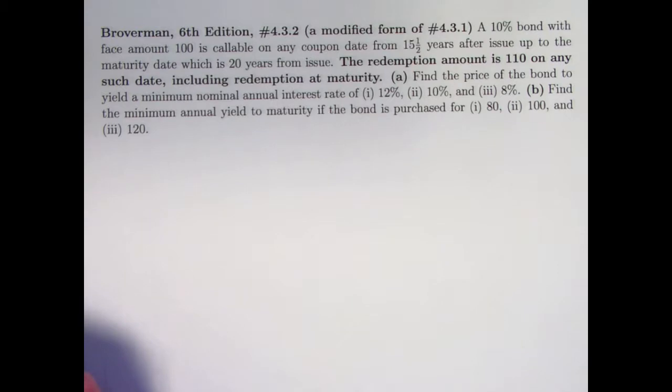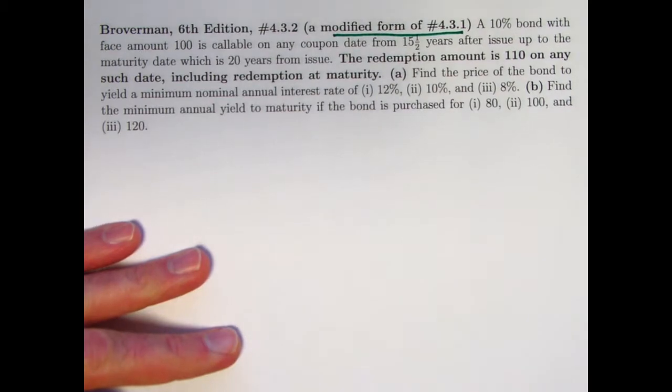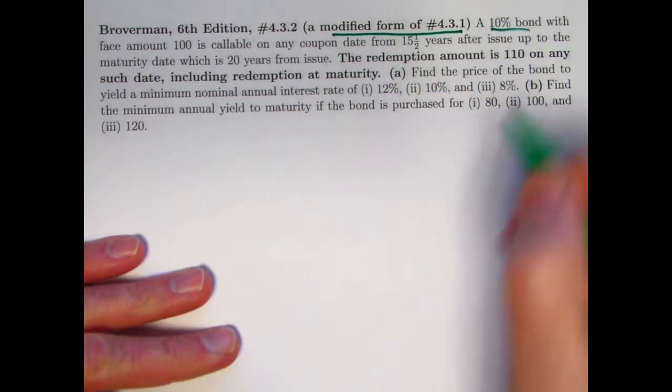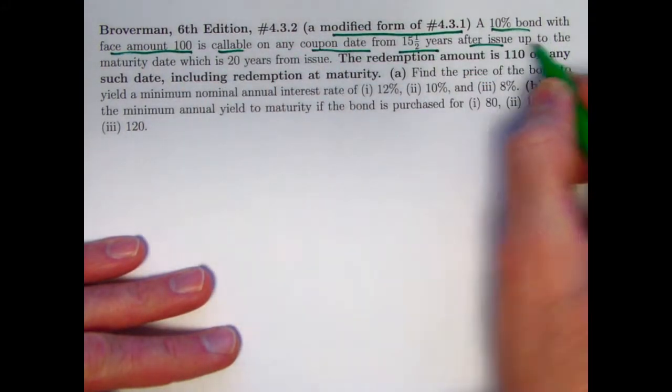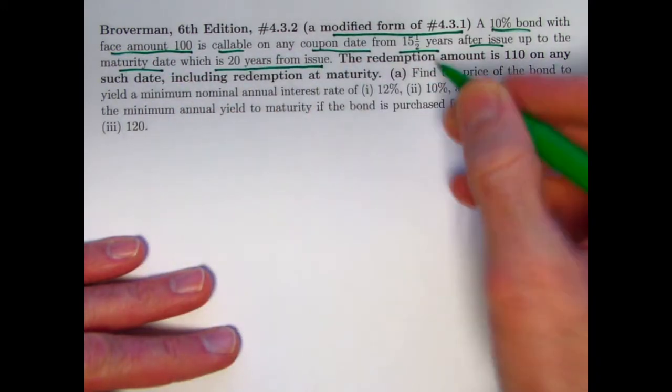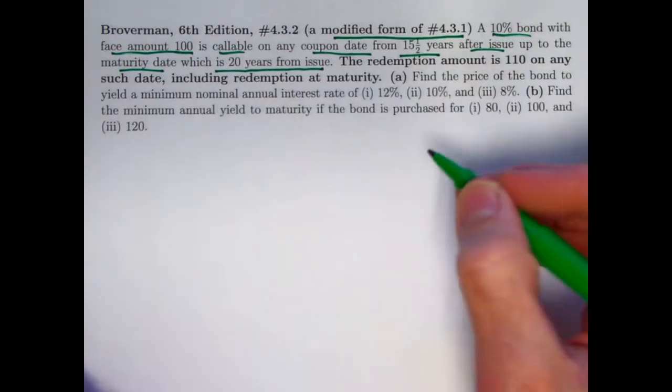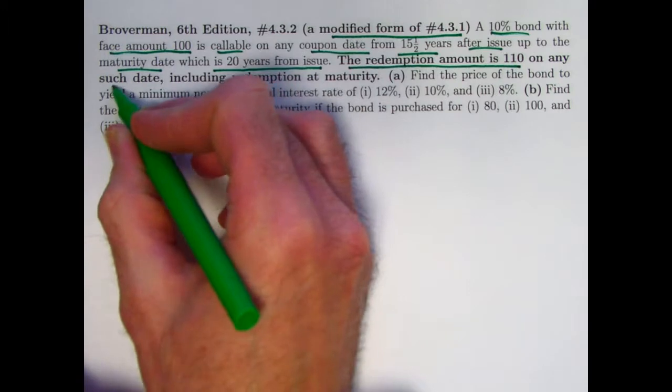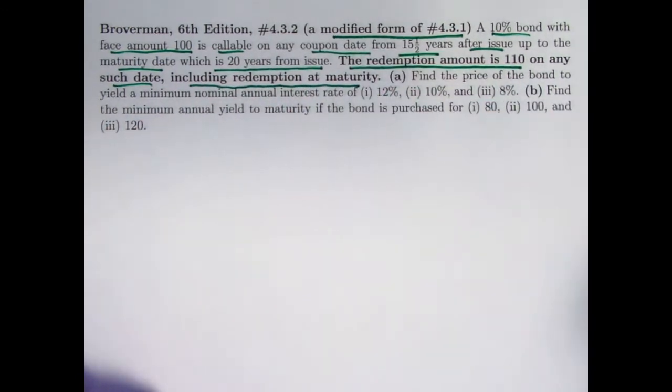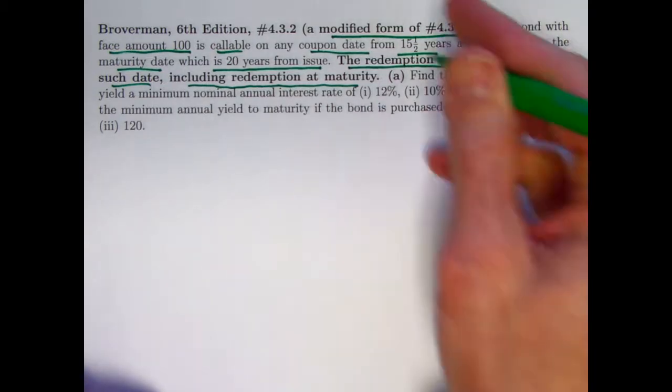So here's the problem statement. This is the same thing as problem 4.3.1, except with the modification that you can see in bold here. We've got a 10% bond with face amount of 100. It's callable on any coupon date from 15 and a half years after issue up to the maturity date, which is 20 years from the issue. So you have semi-annual coupons here, so you can redeem it anywhere between n equals 31 and n equals 40. But now it's not redeemable at par. It's redeemable at 110 on any such date, including the redemption at maturity.